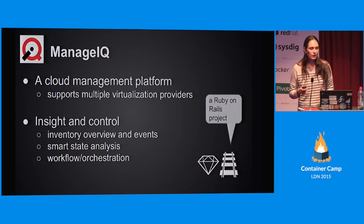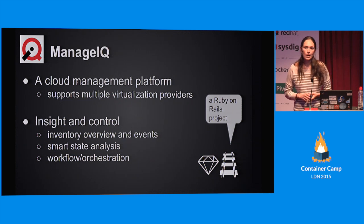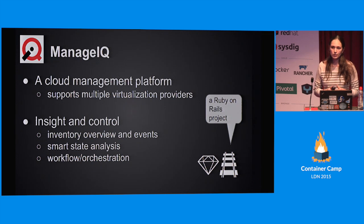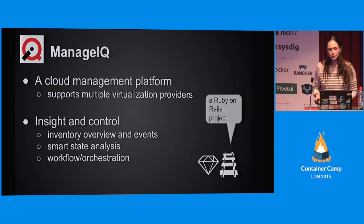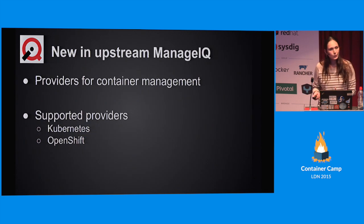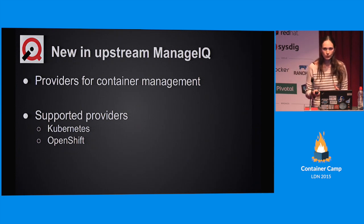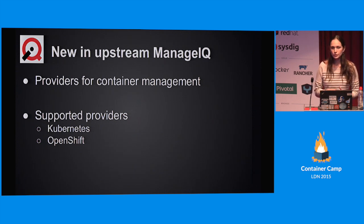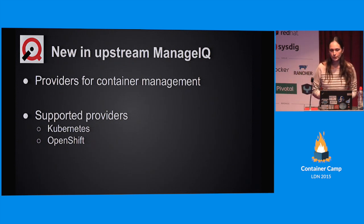ManageIQ has been a cloud management platform, or a manager of managers, and it provides support for cloud and virtualization providers such as OpenStack, Amazon, Rev, and so on. It can connect to those environments, pull the inventory, perform its analysis, do smart state analysis of the virtual machines, and perform some workflow and orchestration based on tagging events. Since Kubernetes and OpenShift would probably anyway run in a cloud or virtualized environment, it felt natural to add support for those two frameworks within ManageIQ. So we introduced a new container-based provider type with support for Kubernetes and OpenShift within ManageIQ.